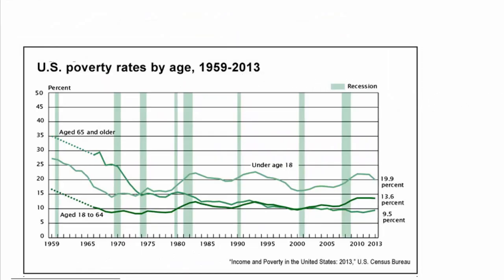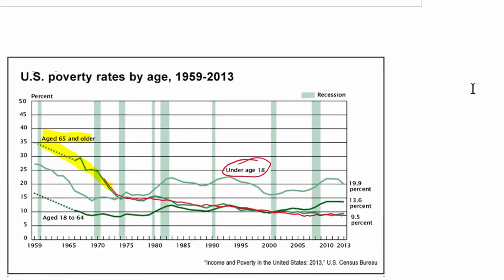Finally, looking at poverty rates by age from 1959 through 2013: even though people 65 and older used to have higher poverty rates, following that line down to today, those 65 and older are now the age group least likely to be in poverty. Children under age 18 are currently the most likely group to be in poverty by age.